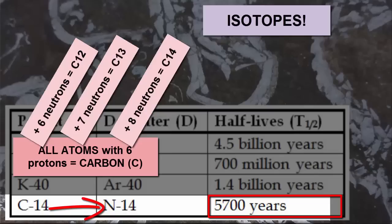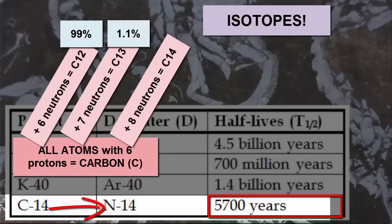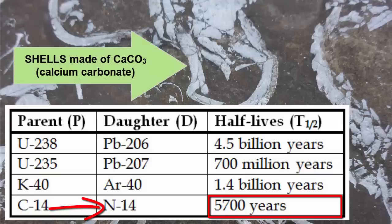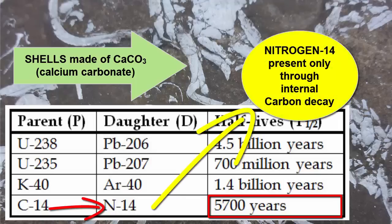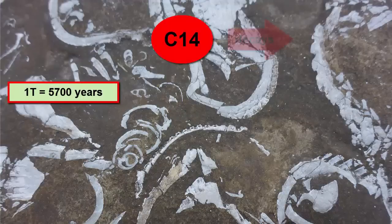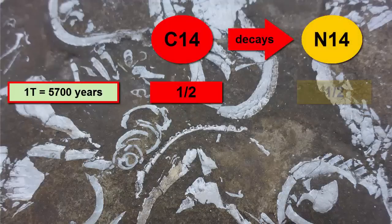Any naturally occurring substance with carbon in it will have about 99% carbon-12, 1.1% carbon-13, and some trace amounts of the radioactive carbon-14 isotope. What makes carbon-14 and nitrogen-14 a very good isotope pair is that most substances that contain carbon in a structure — such as shells made of calcium carbonate — do not also have nitrogen in them. So any nitrogen-14 we see in the material will have come from the decay process. For carbon-14, every 5,700 years, half of the original carbon-14 has decayed to nitrogen-14.